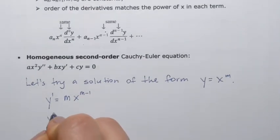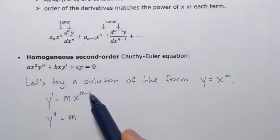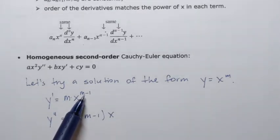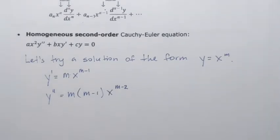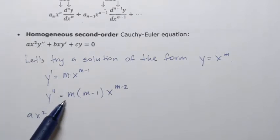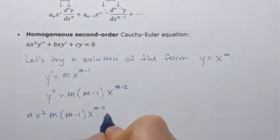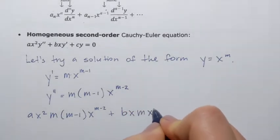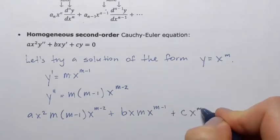For the second derivative, m is a constant so it stays, and we apply the power rule again. The power m minus 1 goes to the front, giving y double prime equals m times m minus 1 times x to the power m minus 2. Now we plug into the equation: ax squared times m(m minus 1) x to the power m minus 2, plus bx times m x to the power m minus 1, plus c times x to the power m equals 0.